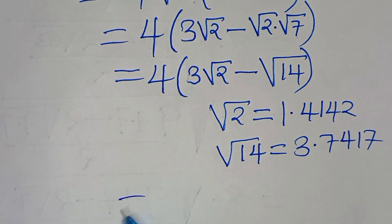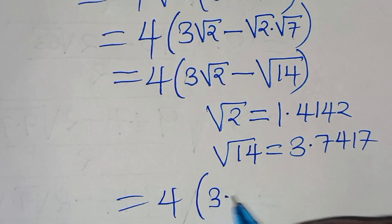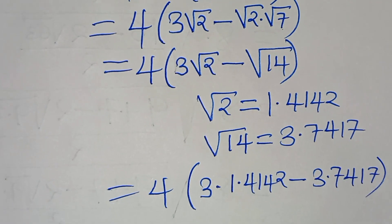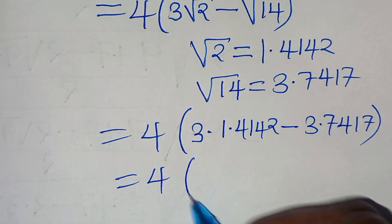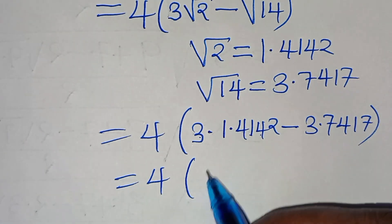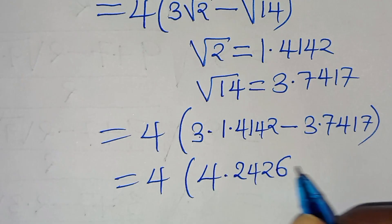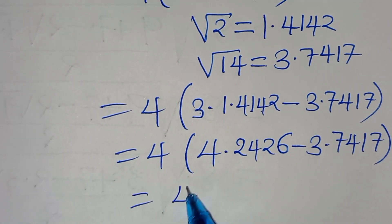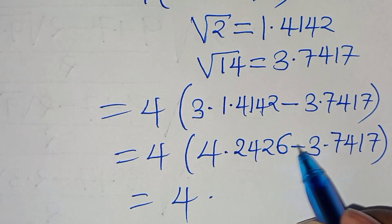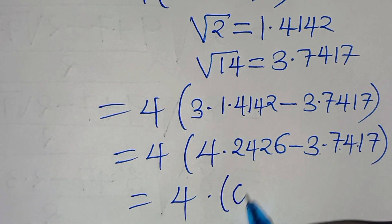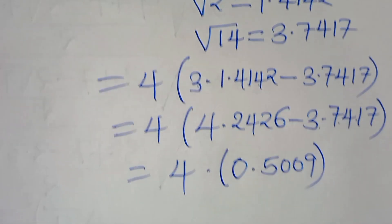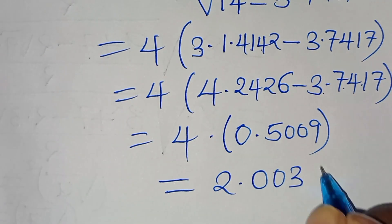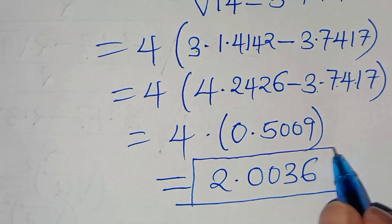Substituting, we have 4 into the parentheses: 3 multiplied by 1.4142, subtract 3.7417. So we have 4 multiplied by 4.2426 minus 3.7417, which equals 4 multiplied by 0.5009. Therefore 4 times 0.5009 equals 2.0036, and this is the solution to this radical square root math problem.